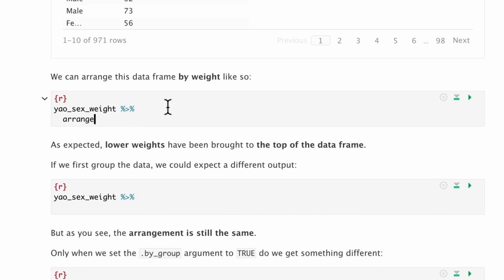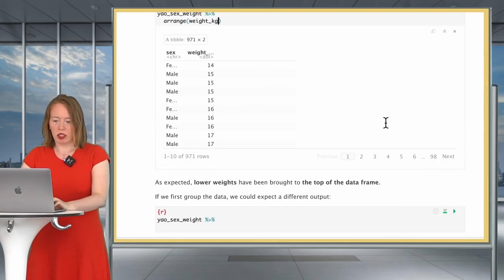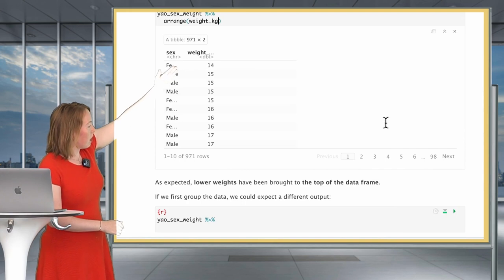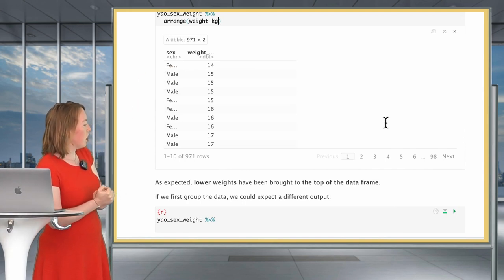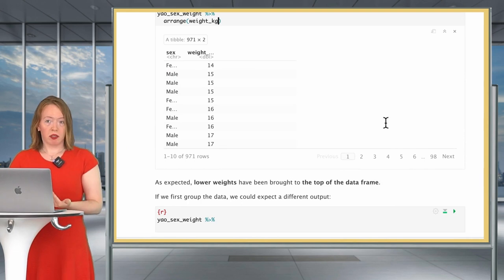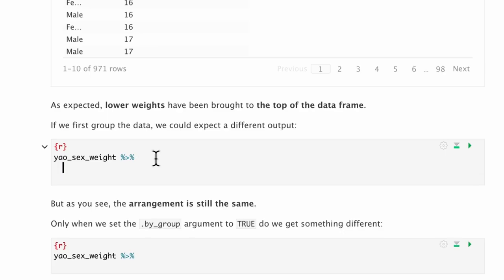We're going to look at arranging by group. The verb arrange orders the rows of a data frame by the values of a selected column. It's only sensitive to groupings if the by_group argument is set to true. Let's illustrate this. First, let's remind ourselves of the small data subset that we'll be using. Then let's arrange this data by weight.